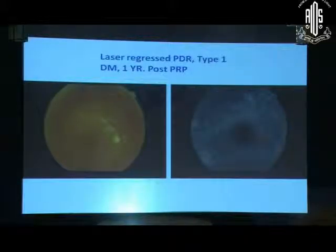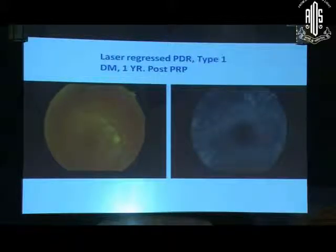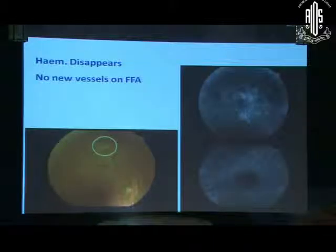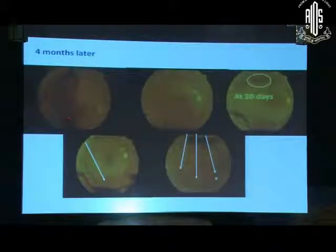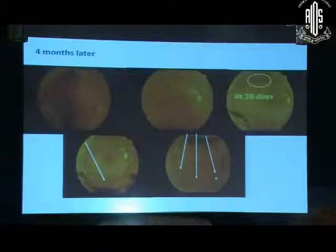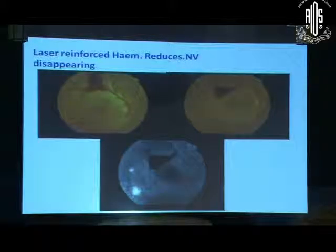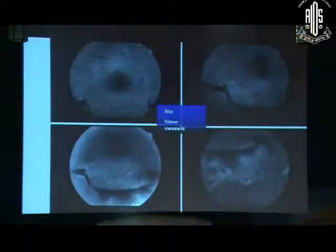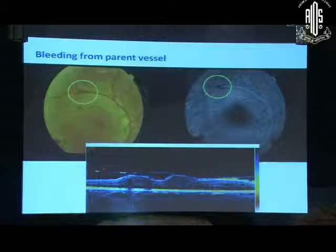Let me establish it through a case example. Type 1 diabetes mellitus, 1 year post-PRP, absolutely quiet retina. Patient presented with bleeding. We did angiography and found new vessels elsewhere and areas of capillary dropout, applied photocoagulation accordingly. Hemorrhage disappeared. At 2 months there were no new vessels. Four months later, patient again presented with bleeding, but we were confident that in 4 months he cannot develop such aggressive new vessels to explain this kind of bleeding. We therefore kept this patient on bed rest and at 20 days the blood cleared. On angiography, no new vessels were found — only this parent vessel was bleeding.